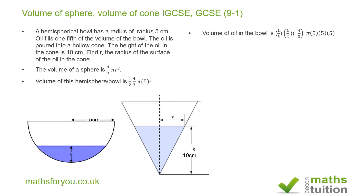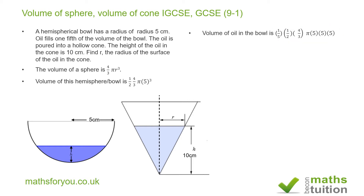We are told that the volume of the oil in the bowl is only one-fifth of the volume of the bowl itself, so we multiply the volume of the bowl by one-fifth. Instead of writing r cubed, I've written π times five times five times five — three fives. This five cancels one of those fives, leaving five times five which is 25.